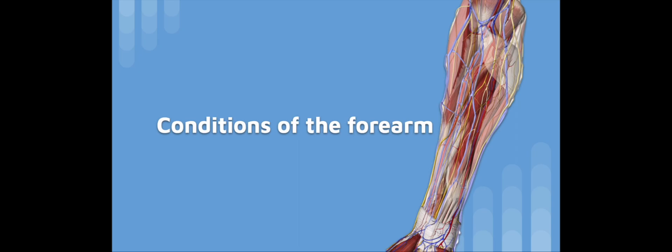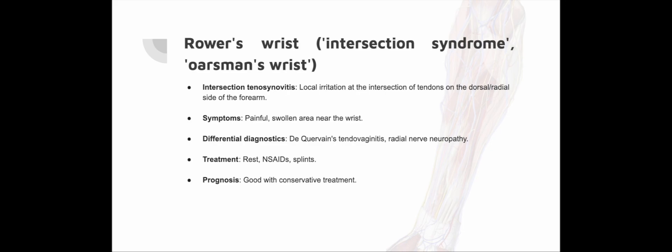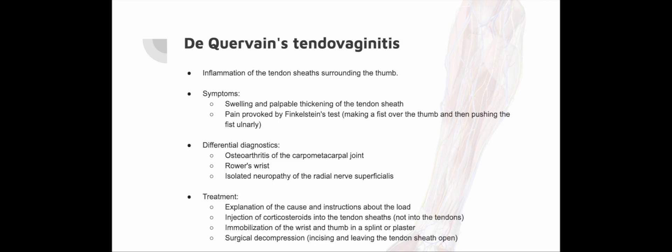Conditions of the forearm: Rower's wrist, or intersection syndrome — a common condition known as intersection tendosynovitis arises from local irritation at the intersection of tendons on the dorsal radial side of the forearm. The irritation results in inflammation of the tendons, causing pain and sometimes swelling in the area slightly proximal to the extensor retinaculum of the wrist. Typically, the pain is located approximately four fingers proximal to the radial styloid process. Differential diagnoses include de Quervain's tendovaginitis and isolated neuropathy of the superficial branch of the radial nerve. Treatment typically involves conservative measures such as rest, avoiding excessive strain, and the use of NSAIDs to manage pain and inflammation. In some cases, relief splints may be recommended. Conservative treatment is generally effective in resolving the condition.